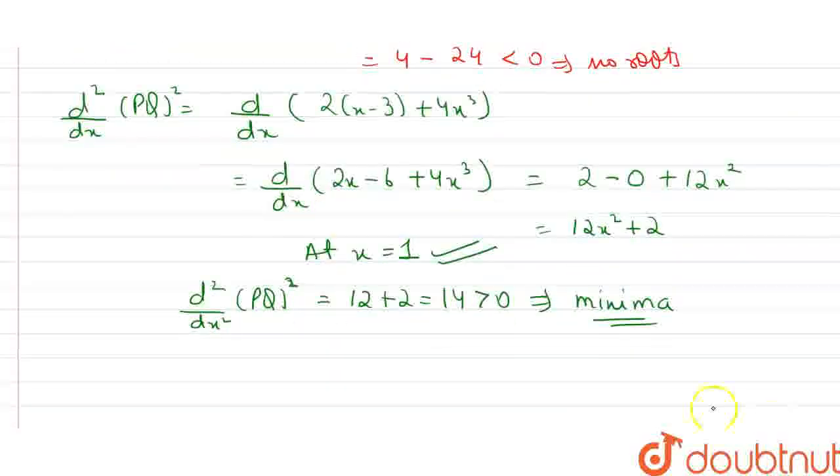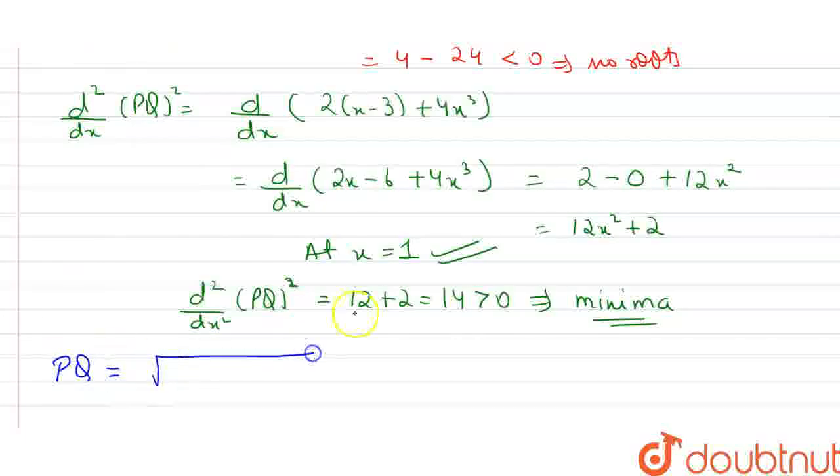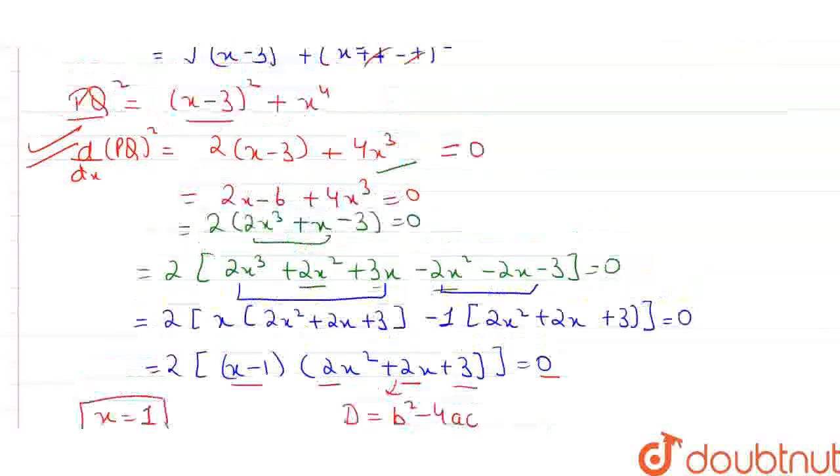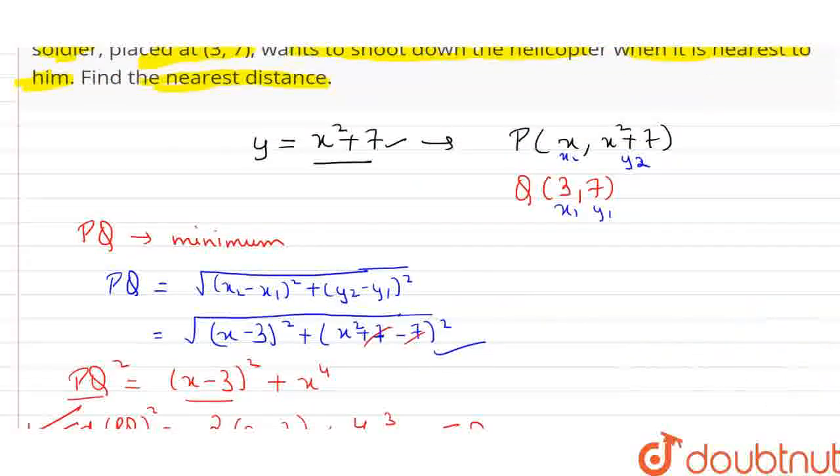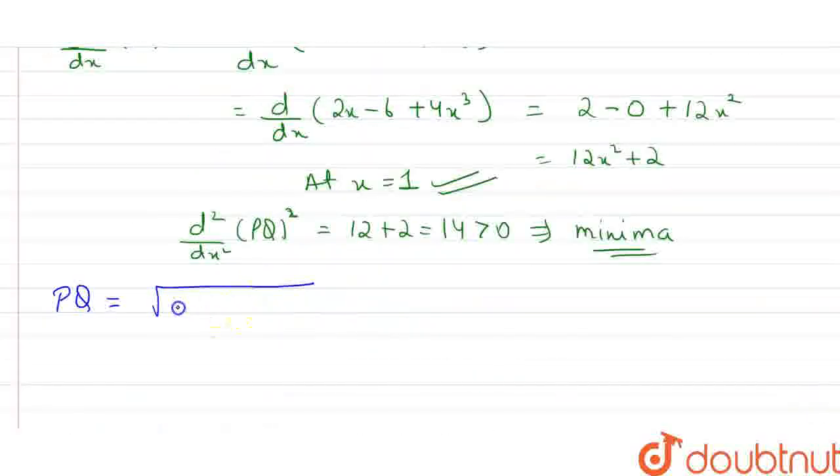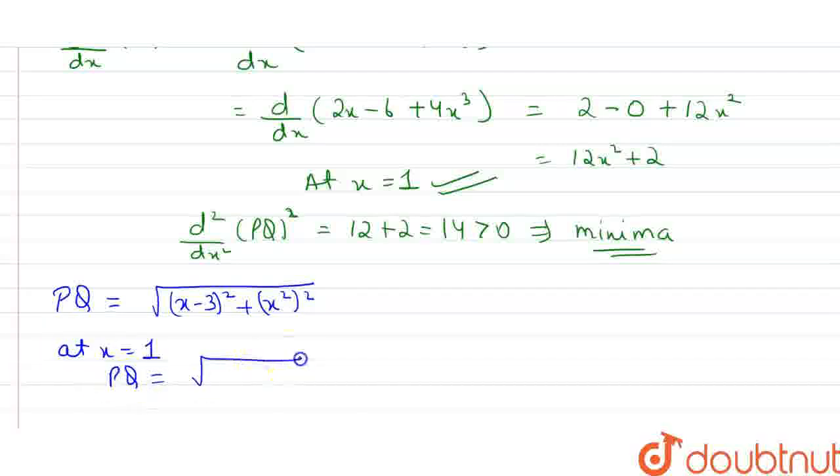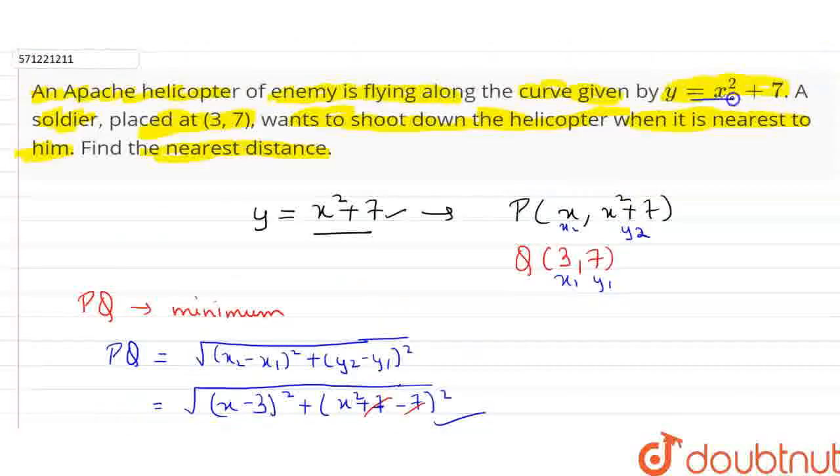So let's put in the distance for which we have to find the minimum value. Our PQ is under root [(x minus 3) whole square plus (x square) whole square]. At x equals 1 that is minimum value, PQ is 1 minus 3 is minus 2 and minus 2 square is 4 plus 1 square whole square is 1 only. So root 5 is the distance when the soldier and the helicopter on this curve is at the nearest point. Thank you.